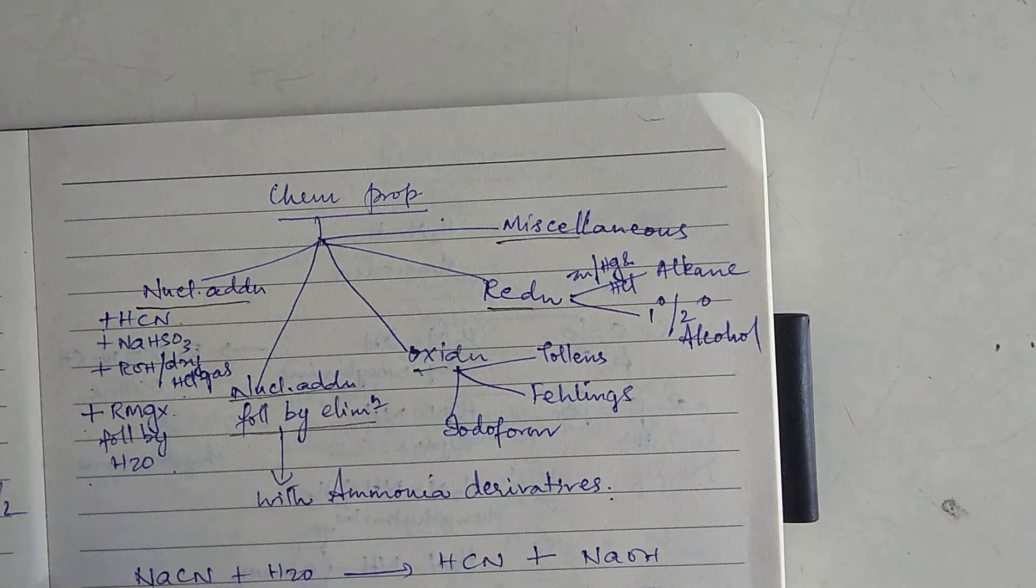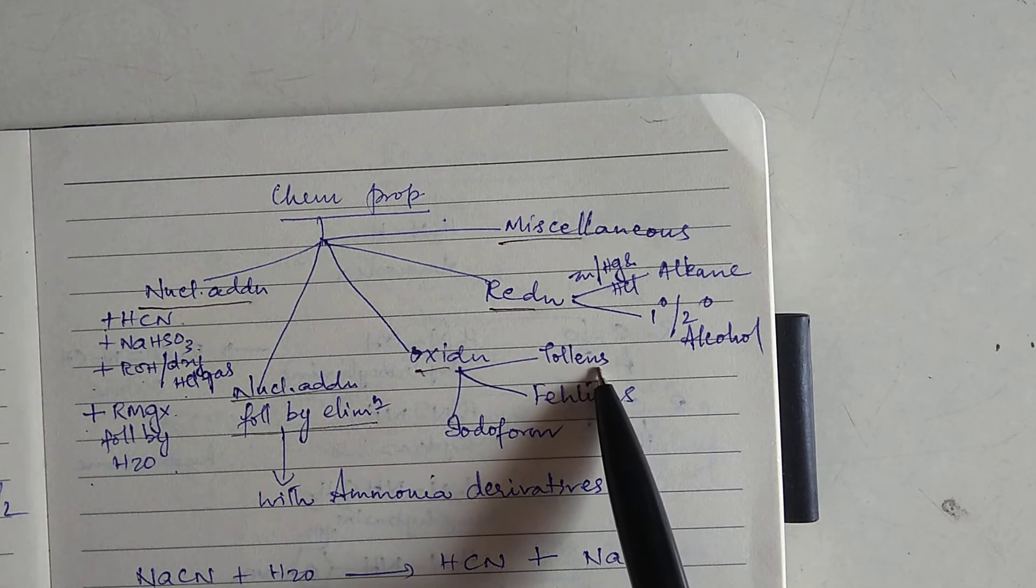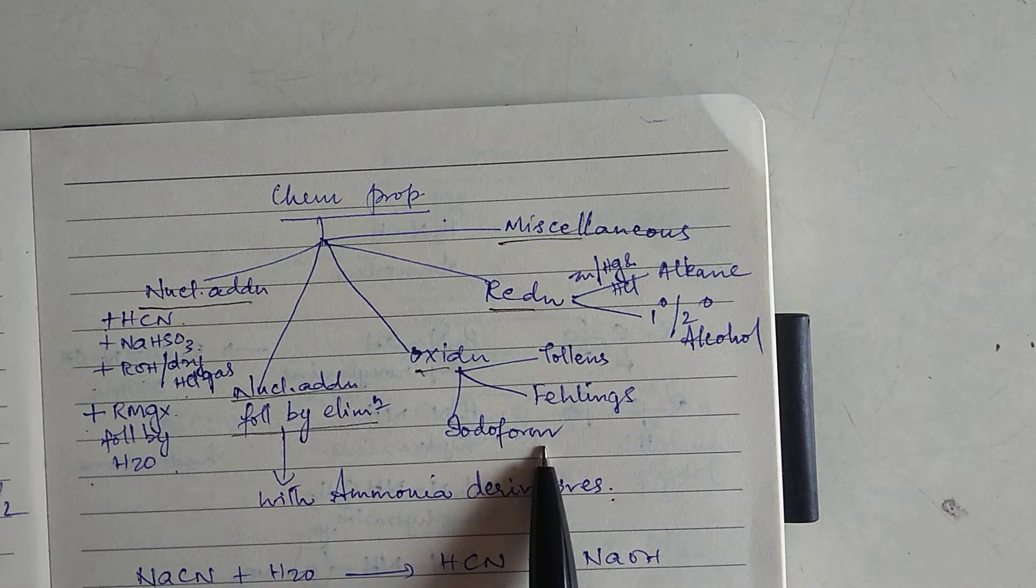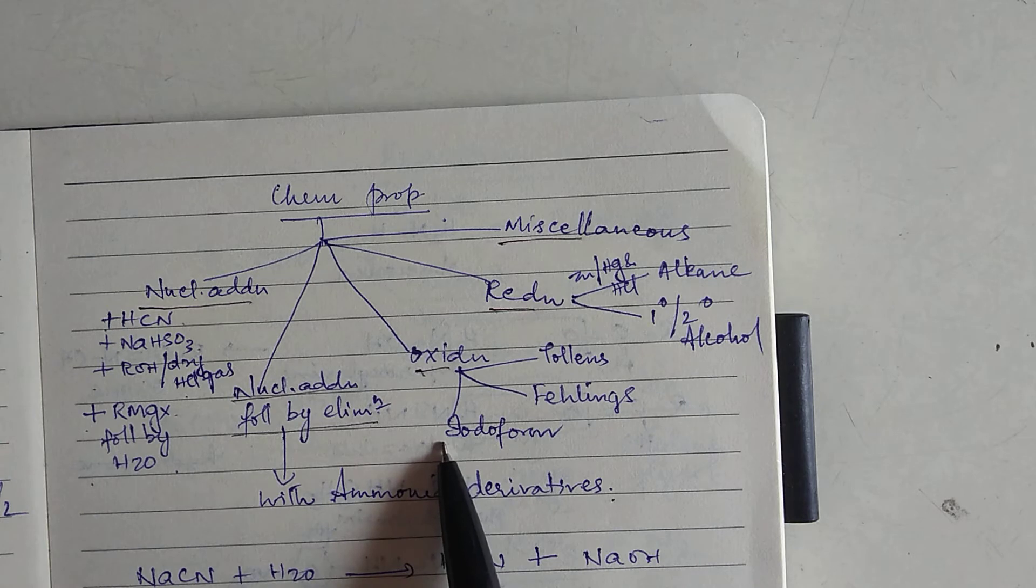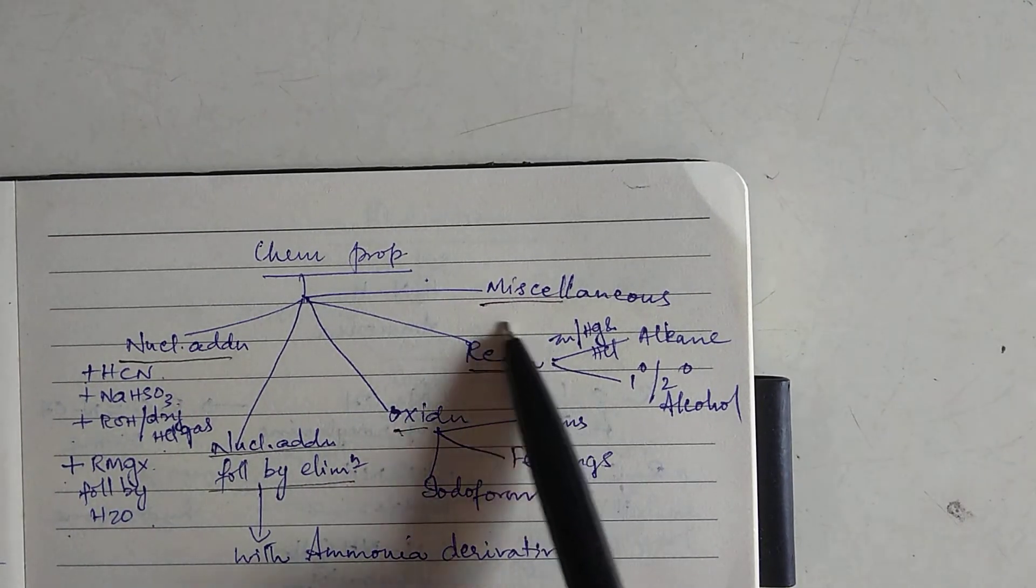Then under oxidation, we are going to study about Tollens test, Fillings test and Iodoform test. So, these are the three oxidation reactions of aldehydes and ketones and then you are going to study about reduction.